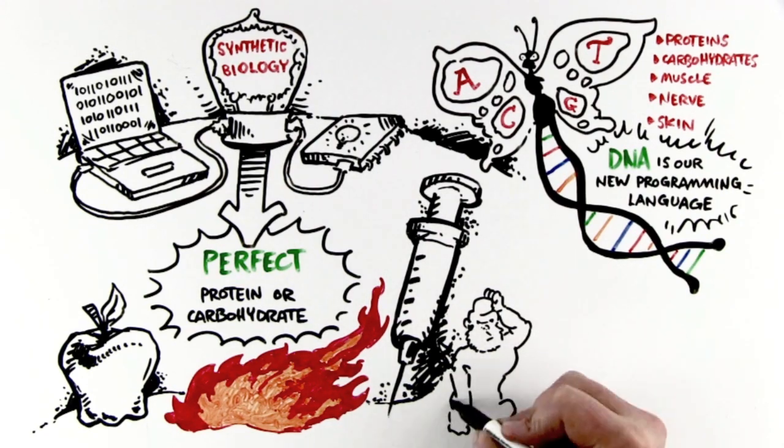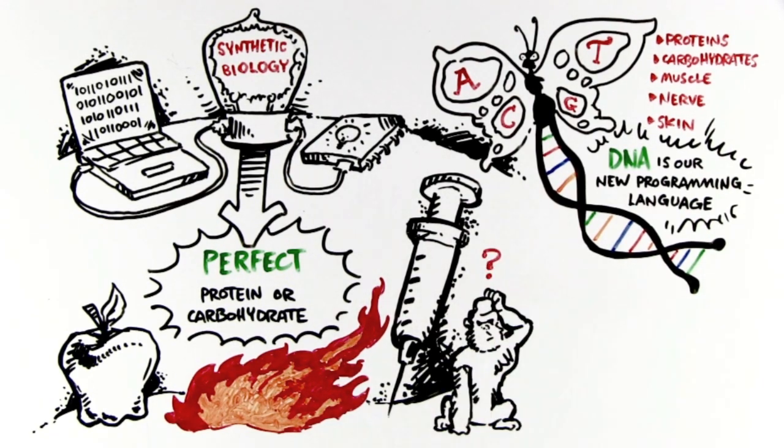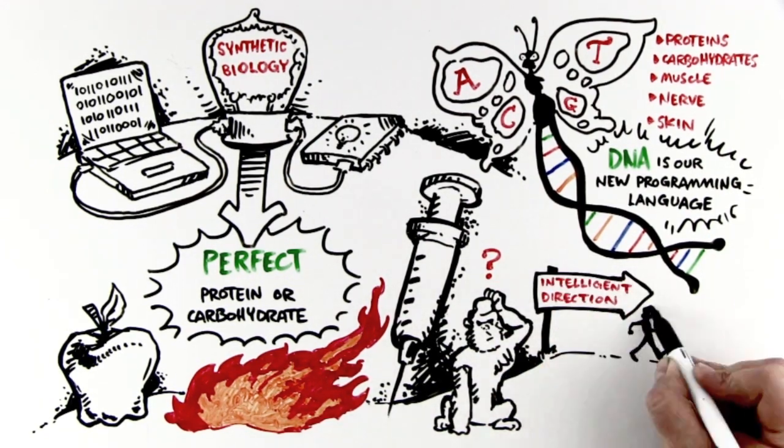Today, we are going from evolution by natural selection, or Darwinism, to evolution by intelligent direction.